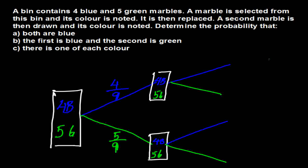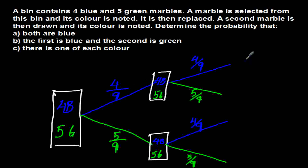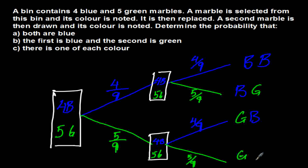So from the blue branch we can pick a blue (4 out of 9) or a green (5 out of 9), and from the green branch we can also pick a blue or a green. This gives us four outcomes: blue-blue, blue-green, green-blue, and green-green.